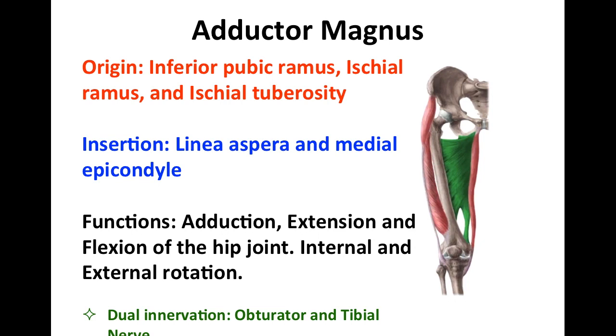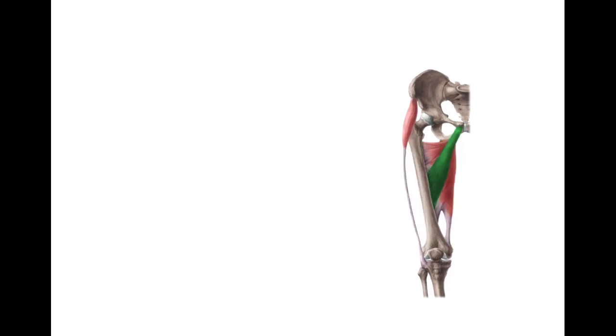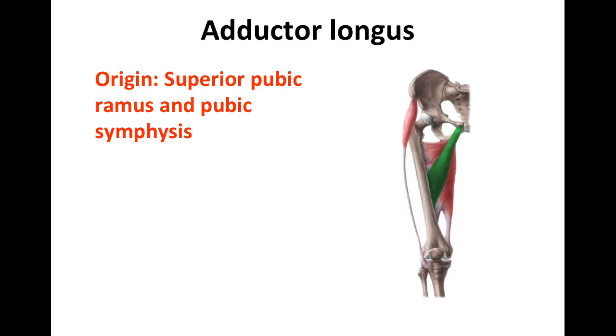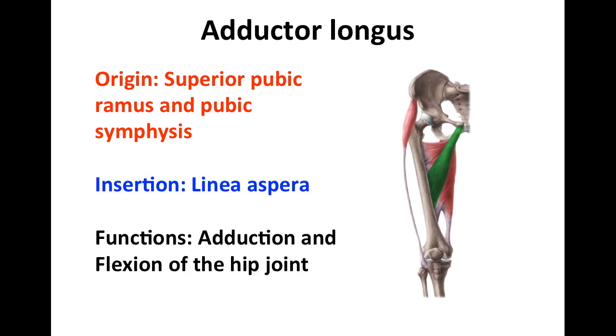Next we're going to be talking about the adductor longus. The point of origin for this is the superior pubic ramus and pubic symphysis. It inserts in the linea aspera, and its function is adduction and flexion of the hip joint.